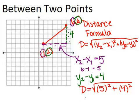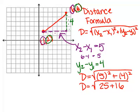And if we keep going to simplify, we get D equals the square root of 25 plus 16. And again, keep going, add together 25 plus 16, and you get 41. So, that means that the distance between those two points is the square root of 41, which is approximately 6.4.